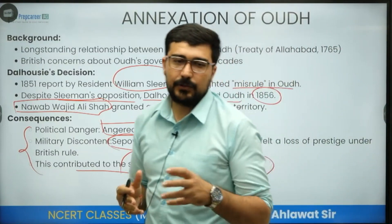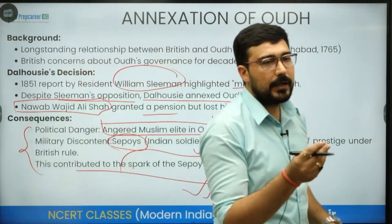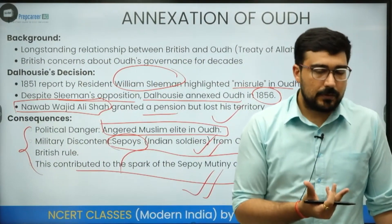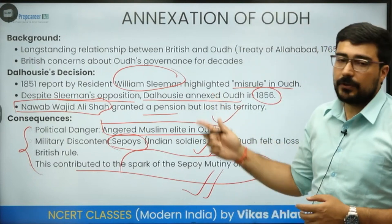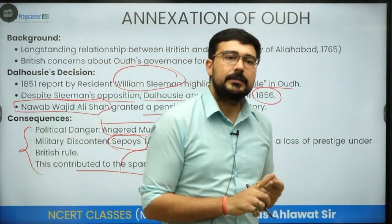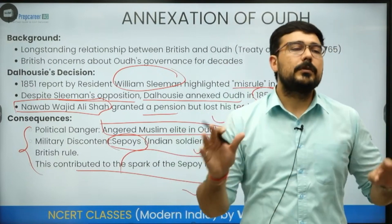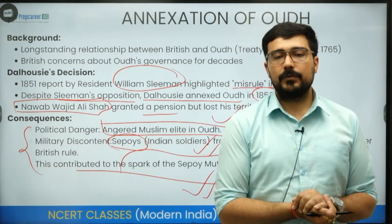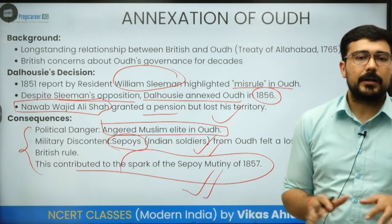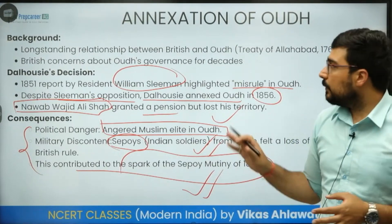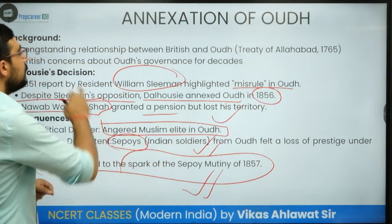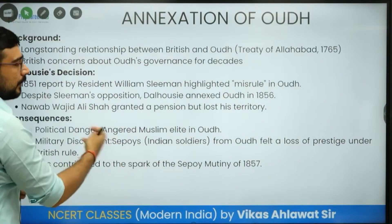The issue of Enfield rifles — having grease from pork and beef — were surface issues. The major issue of the revolt was the annexation of Awadh, because the sepoys of Awadh had always been very loyal to the British. They had served in the war in Afghanistan, the war against Punjab, and helped capture the majority of India. But when such actions were taken, their loyalty was shaken. These soldiers, forming one-third of the Bengal Army, were now going to be responsible for the mutiny that would eventually turn into a revolt.